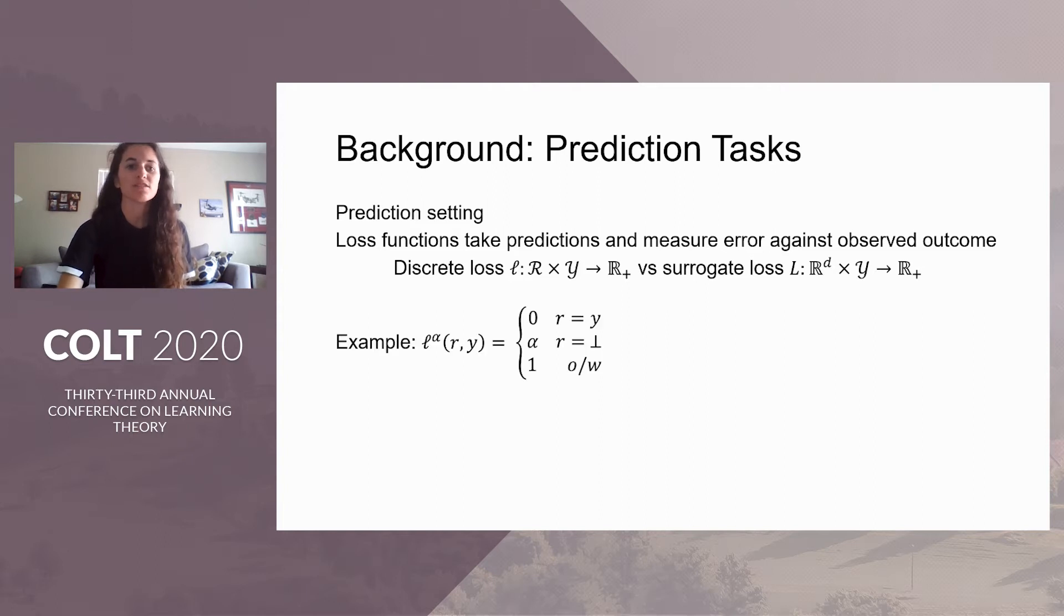One example of this is a variation of the 0-1 loss that we will call the abstain loss, where you get punishment 0 if you predict an outcome and are correct, punishment 1 if you predict an outcome and are wrong, and a lesser punishment alpha somewhere between 0 and 1 if you abstain from predicting, denoted by the bot.